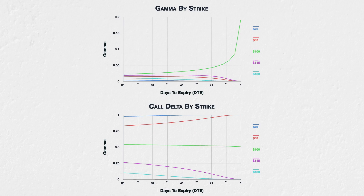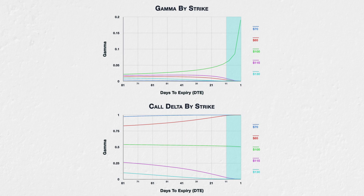This is a chart of the corresponding call deltas — all parameters are exactly the same, except the delta is displayed instead of the gamma. When we are getting close to expiry, the in-the-money strikes of $70 and $85 both have a delta of close to 1. For this to change, the underlying price would have to decrease dramatically, which with hardly any time remaining until the options expire is unlikely. A $1 change in the underlying price will therefore barely affect their delta, so their gamma is very small. Similarly, the out-of-the-money call strikes of $115 and $130 both have a delta of close to zero. A $1 change in the underlying price will therefore barely affect their delta, so their gamma is also very small.